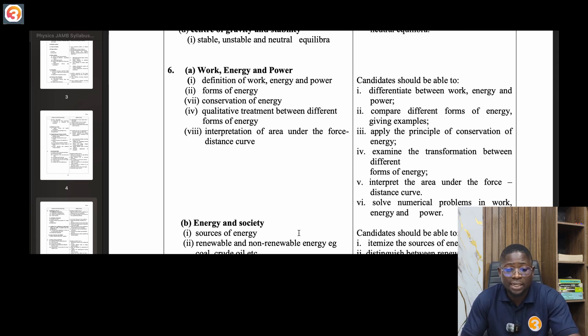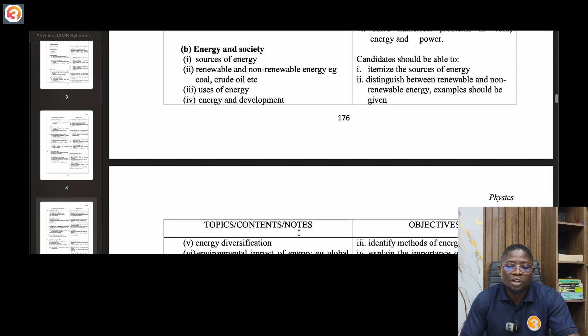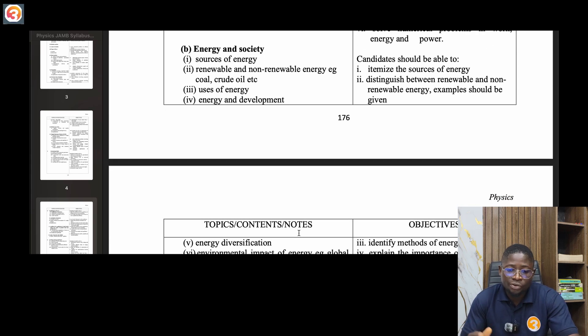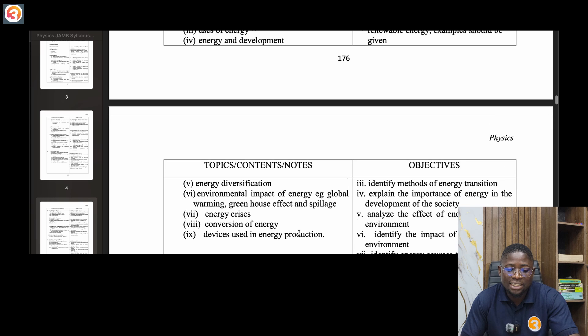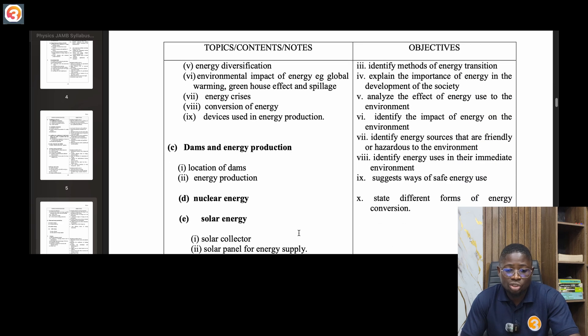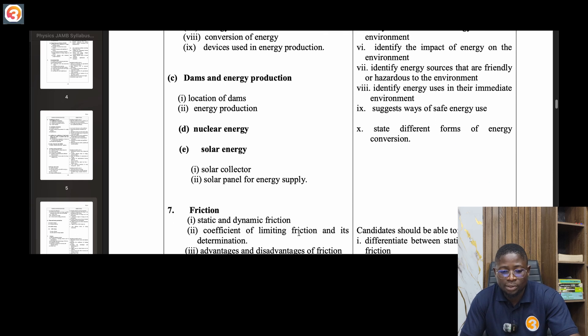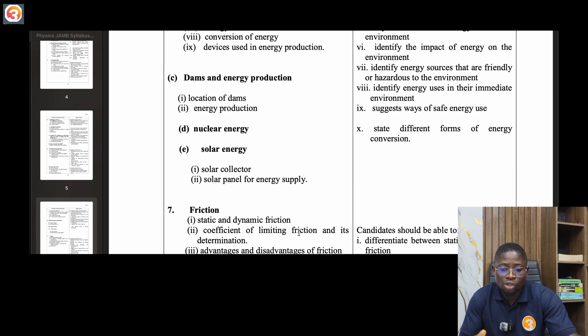Six, work energy and power. Definition of work, energy and power, forms of energy, conservation of energy, qualitative treatment between different forms of energy, interpretation of area under force-distance graph. Energy and society: sources of energy, renewable and non-renewable energy sources, uses of energy and energy development, energy diversification, environmental impact of energy, global warming, greenhouse effect, energy crisis, conservation of energy devices, dams and energy production, nuclear energy, solar energy.